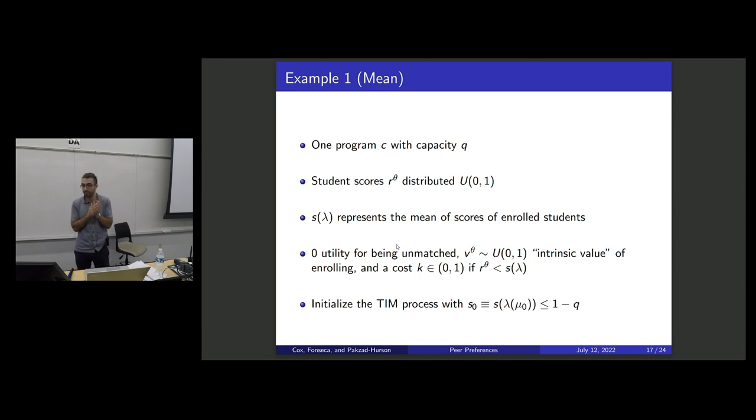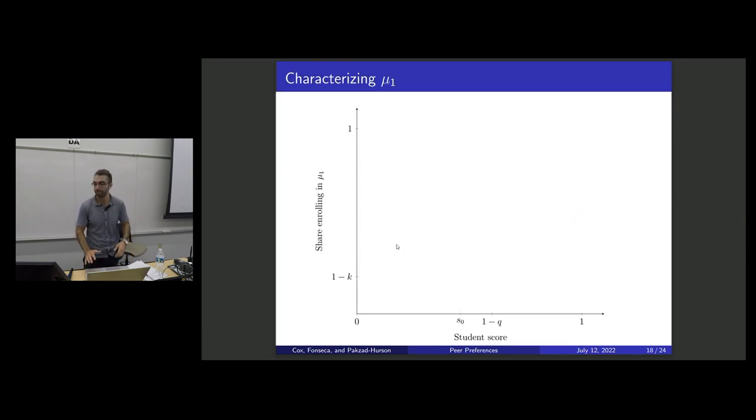And so let me try to end on this example here. We have one program, C, with capacity Q, and the student scores are going to be distributed uniform zero one. There's just one school, so it's just going to be a one-dimensional object. Students are going to care about the mean of the scores of the students who are enrolled. So they all get zero utility for being unmatched, and then if they're matched to the school, they get a utility V_theta, which is just some intrinsic component, and then they have to pay some cost if they're overmatched by their peers.